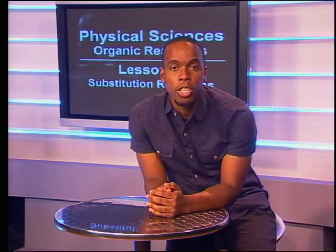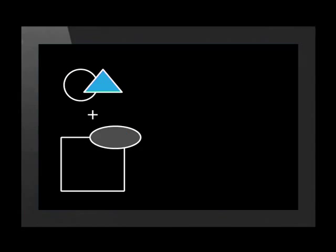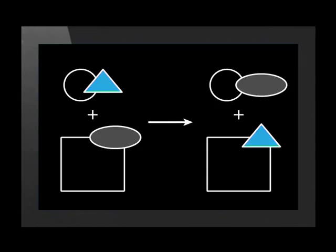Substitution starts with two molecules. The shapes here represent two molecules. What happens next is that they swap a piece. Two reactants make two products, just like in this diagram.